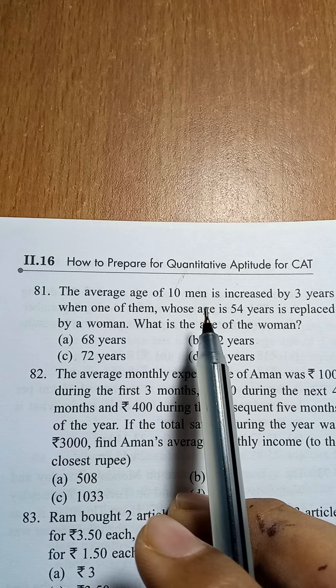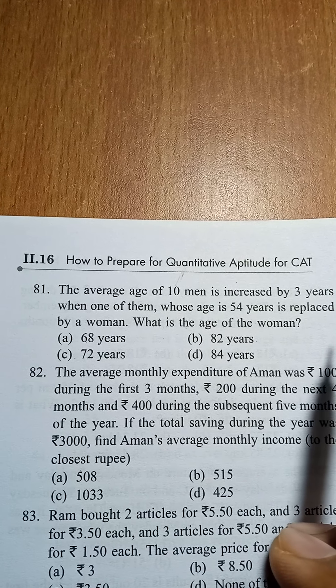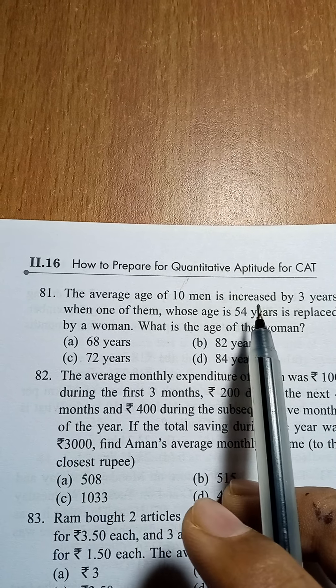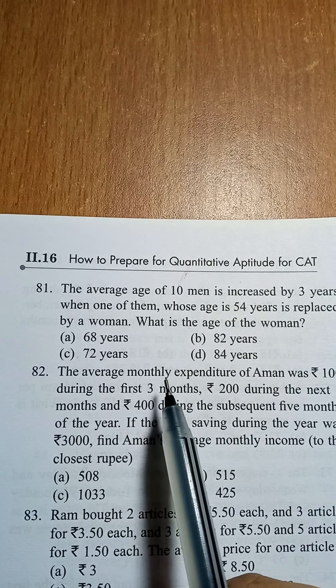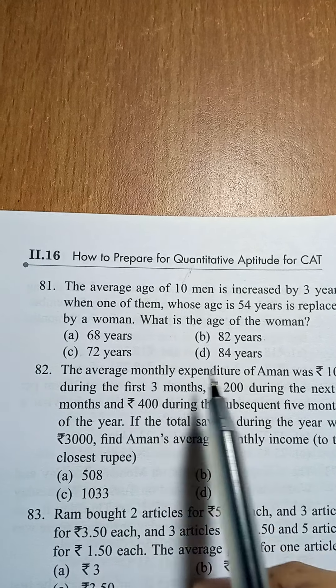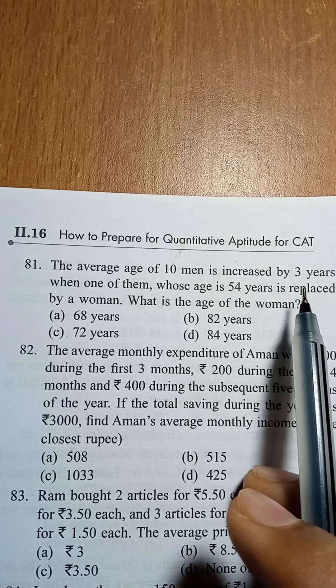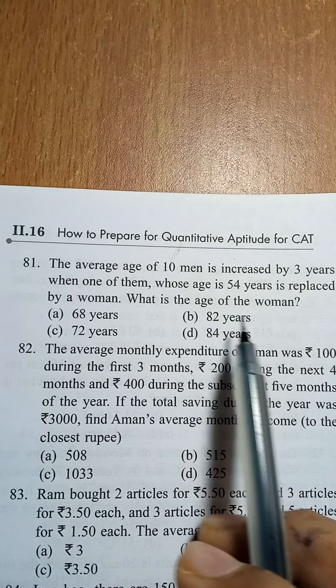So when there were 10 men in total, there was some average. One man was 54 years of age. When a woman replaced him, the average increased by 3 years. So what is the age of the woman?